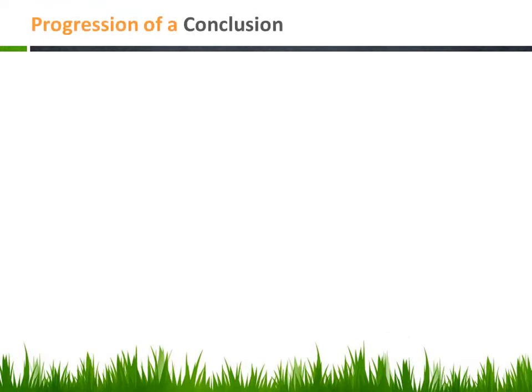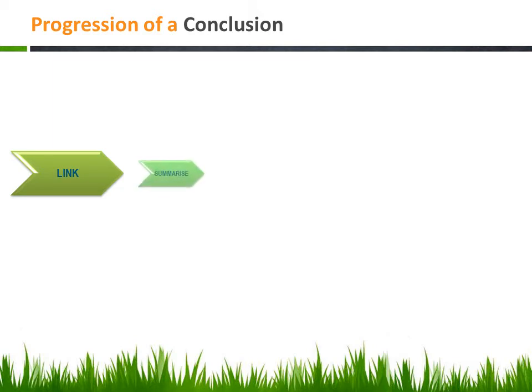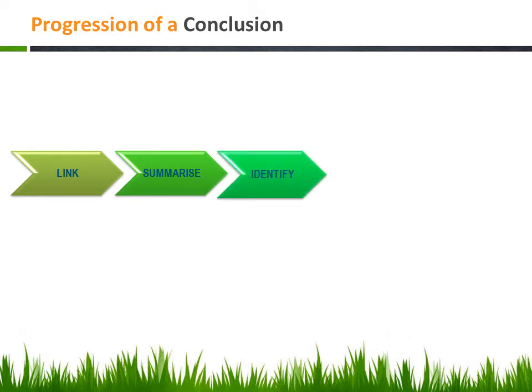The essential elements of a conclusion must be carefully integrated and progress logically from one to another. Start with a sentence that links back to the main subject discussed in the body of the essay. Following this, give a brief summary of your argument or information to make it easier for the reader to recall the overall content of your paper. It is important to summarise the key points only. You may also wish to identify the main reasons, causes or factors that relate to the question that you have been asked to address.